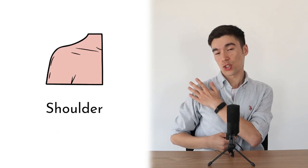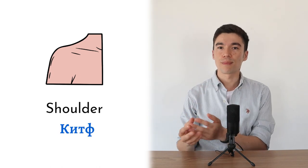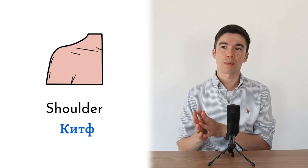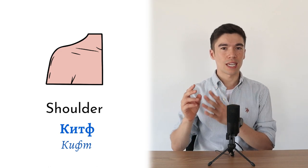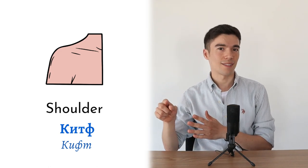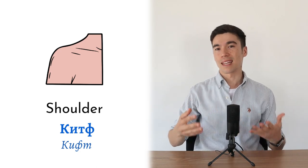And the shoulder, shoulder is kitf. But some people say kift instead. So it's kift, F and then te. So the correct one will be kitf.